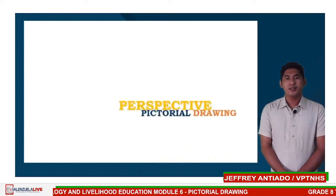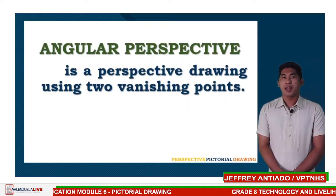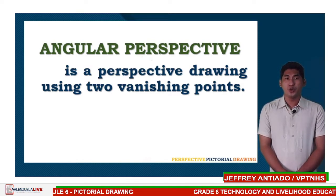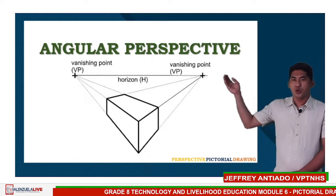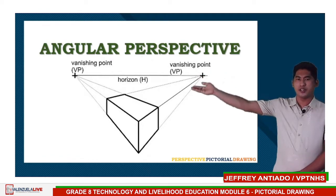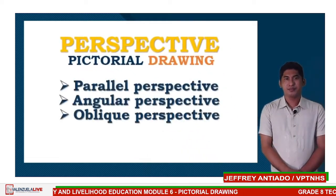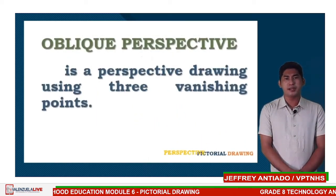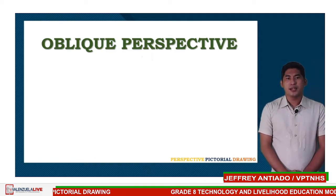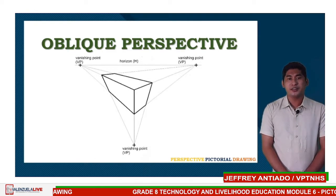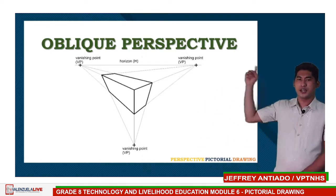Let's proceed now to the second type: the two-point or angular perspective. This is a perspective drawing using two vanishing points. In the drawing, you'll see that there are two vanishing points — one on each side. Lastly, the three-point or oblique perspective is a perspective drawing using three vanishing points. In the drawing, we will see that there are three vanishing points.